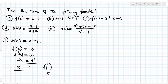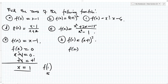Now for b, you have f of x equal to x plus 1, all squared, equal to 0. So the zeros of this function is when f of x is equal to 0. At the point where f of x is equal to 0 is at x plus 1, all squared, equal to 0.